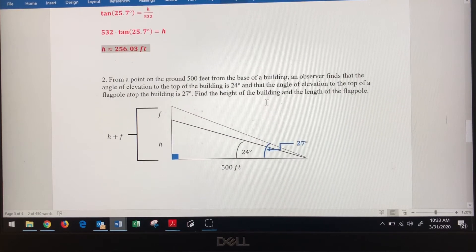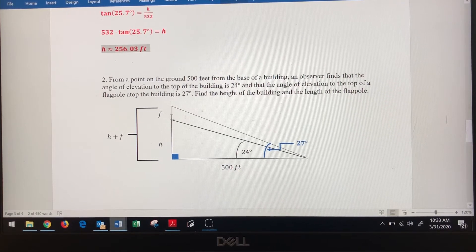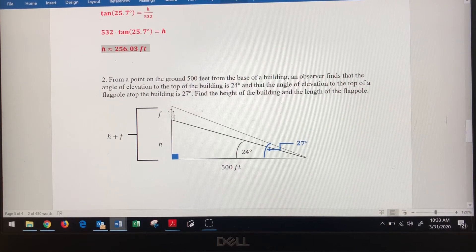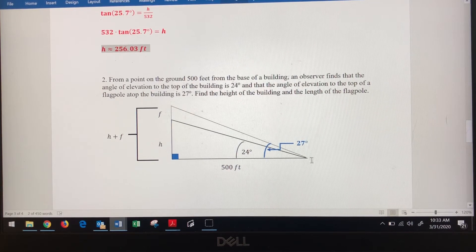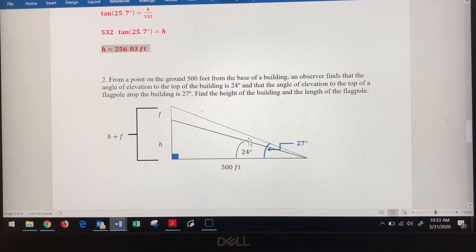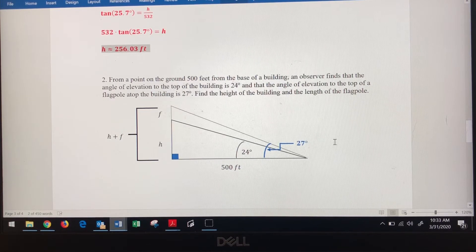Let's look down at problem two. From a point on the ground 500 feet from the base of a building. So this is our building over here and this is the little flagpole on top of it here. We're 500 feet away, so this individual, this observer, is standing right here on the ground. The angle of elevation to the top of the building is 24 degrees. So this angle right here is 24 degrees. This is the top of the building and this is the flagpole.